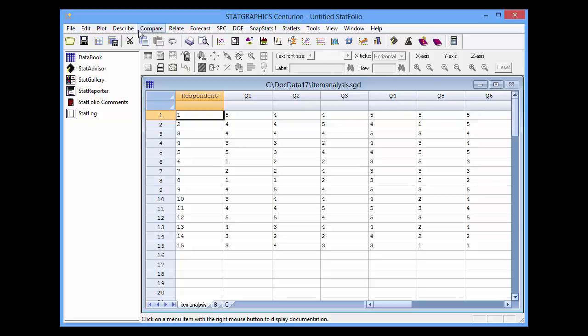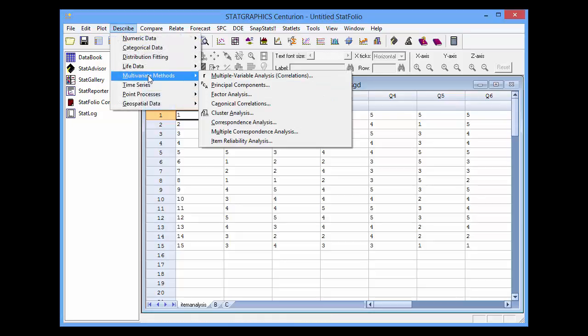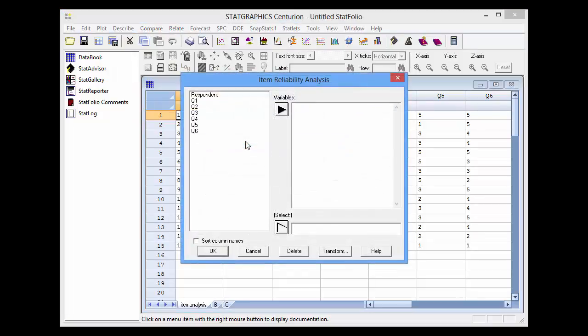To do an item reliability analysis, I'll go to the main menu to describe multivariate methods, item reliability analysis. In the field for the variables, I'll put the column names Q1 through Q6.